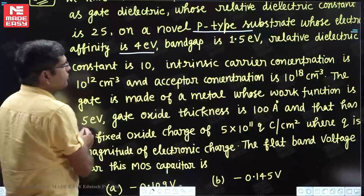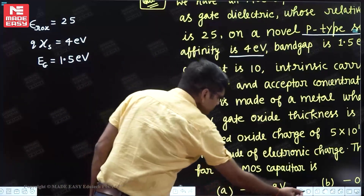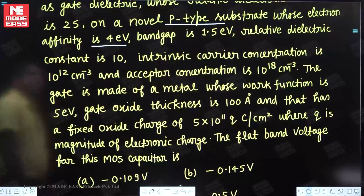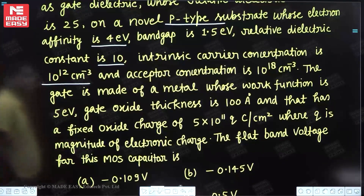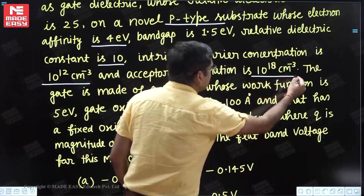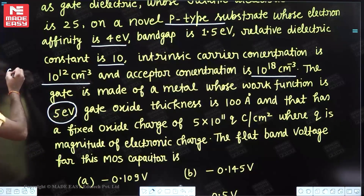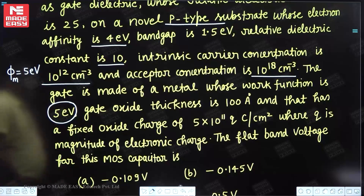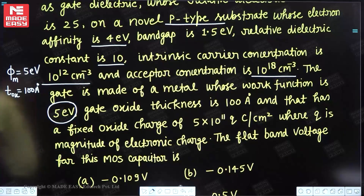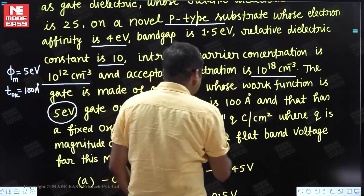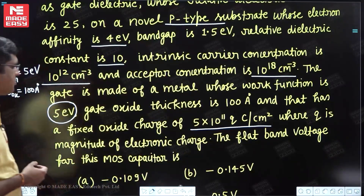The band gap of the semiconductor is also given: E_g = 1.5 eV. The relative dielectric constant of the semiconductor is 10. Intrinsic carrier concentration N_i = 10^12 per cm³ and acceptor concentration N_a = 10^18 per cm³. The gate is made of a metal whose work function phi_m = 5 eV. Gate oxide thickness T_ox = 100 Å. There is also a fixed oxide charge of 5×10^11 per cm² (fixed oxide charges are also known as trapped charges).